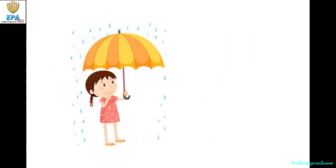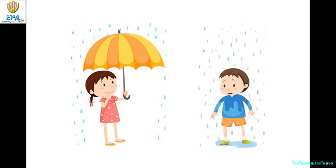Now again, I want you to look at this picture. This time, we have a girl and she is using an umbrella. It is raining. This girl is dry. Now look at this boy. He doesn't have an umbrella, and it is raining. This boy is wet. He is wet from rain.